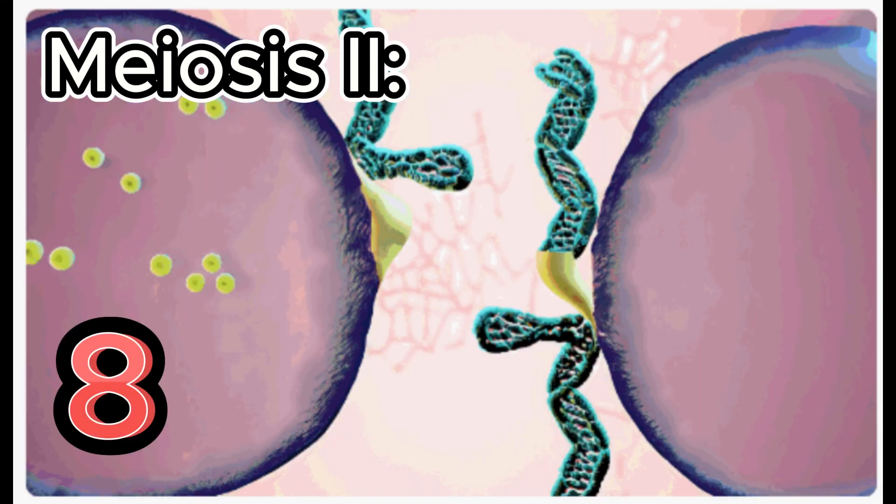Number 8: Anaphase II. Sister chromatids separate and move toward opposite poles of the cell.